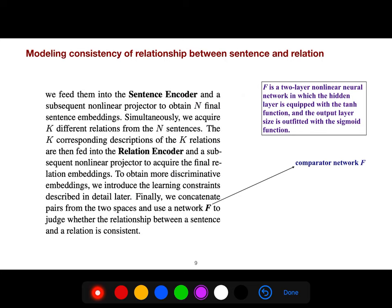Modeling consistency of relationship between sentence and relation. So F, that F that I said, is a comparator. It's a two-dimensional nonlinear neural network in which the hidden layer is equipped with the tanh nonlinearity. And the output layer is outfitted with the sigmoid function.